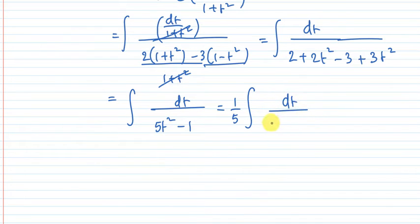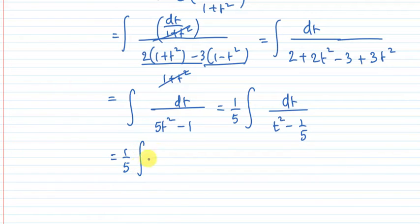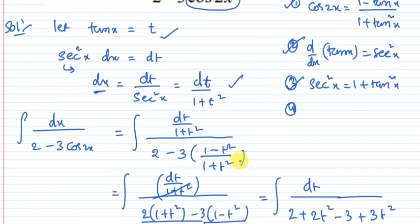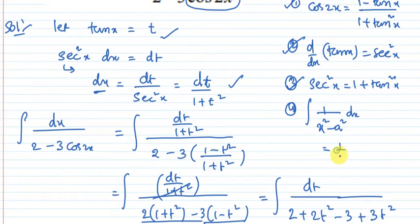This simplifies to 1/5 times integral of dt divided by t squared minus 1/5. Rewriting: 1/5 integral of dt divided by t squared minus (1 divided by root 5) squared. This matches the standard form integral of dx/(x squared minus a squared).